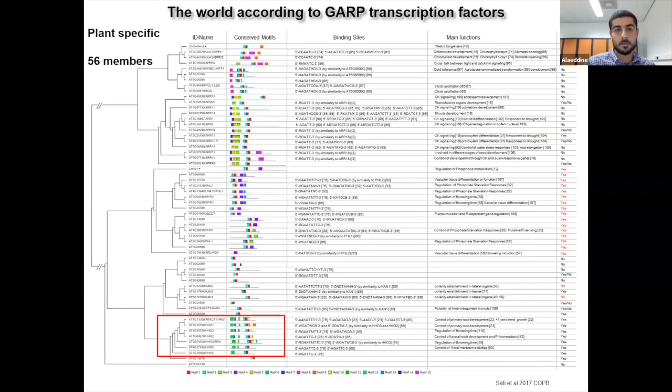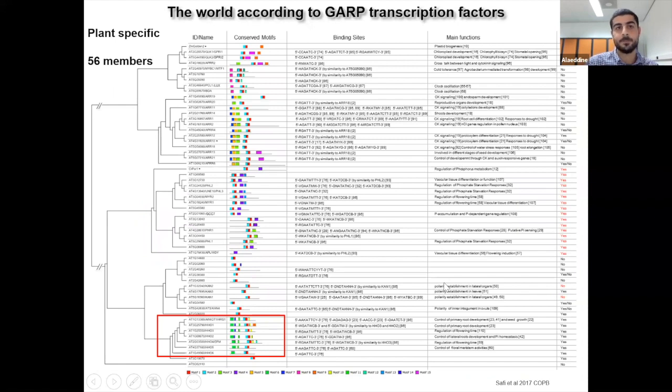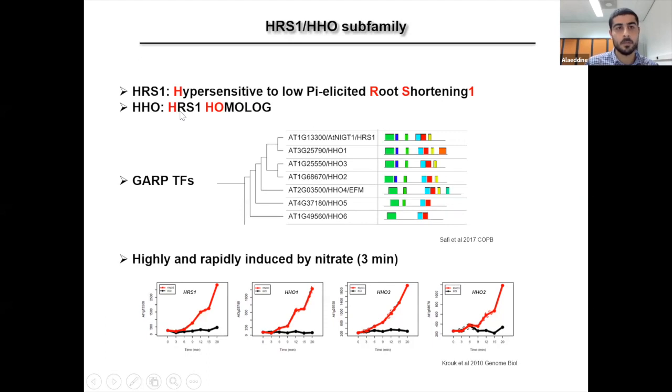So HHO transcription factors belong to the plant-specific GARP transcription factor family, which is composed of 56 members involved in several physiological pathways, such as the organ developments, clock oscillations, cytokine signaling, and phosphate signaling. And if you want to know more about this family, I invite you to visit our paper about it. But today, I will be focusing about this group called HHO for CHERS-1 homolog.